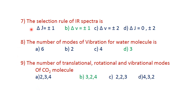Question number seven: the selection rule for IR spectra is delta nu equals plus or minus 1. Question eight: the number of modes of vibration of water molecule — water has N equals 3 atoms, so it has 3N-6 modes of vibration, giving three modes of vibration for water.